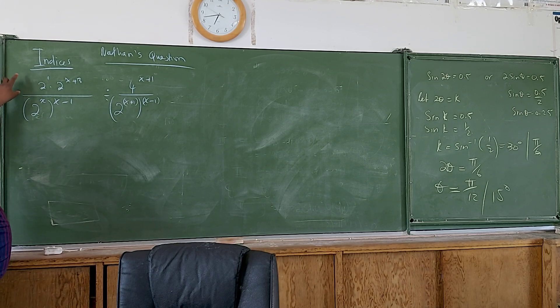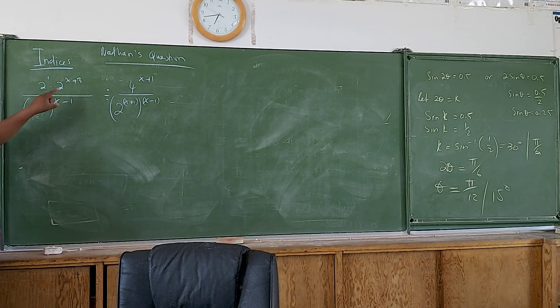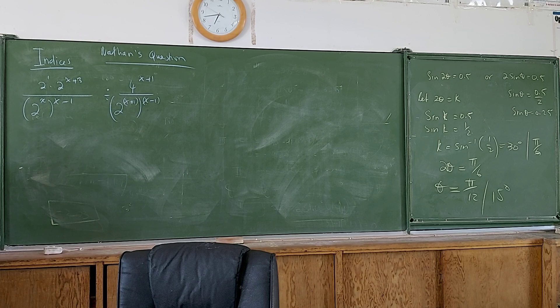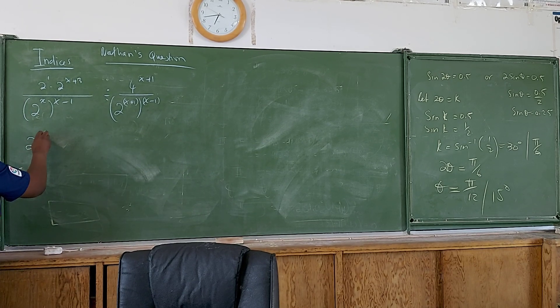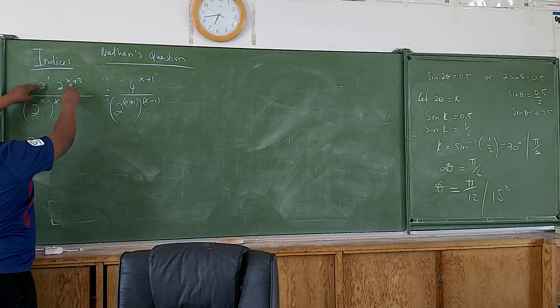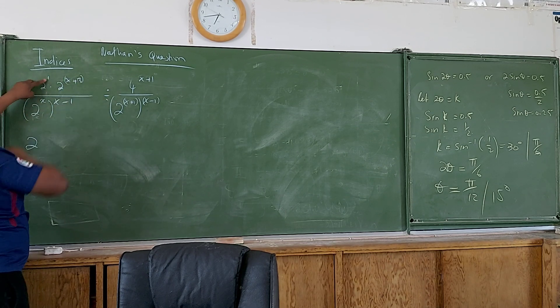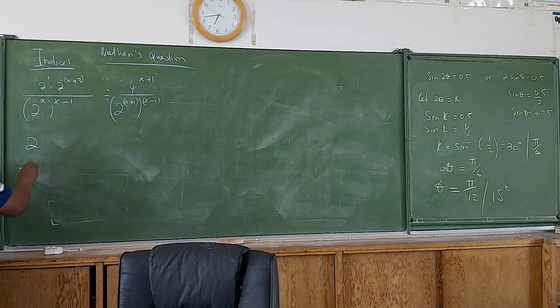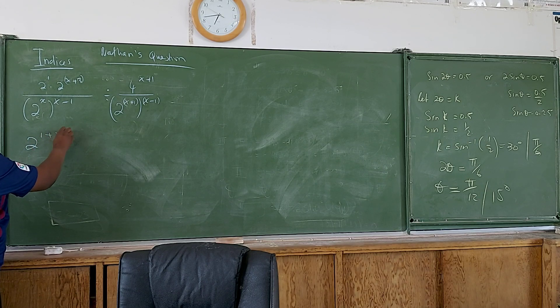This is already adopted in terms of 2. So you're going to do this: you're going to say 2, then when you multiply and the bases are the same, you are adding the indices, right. So you're going to add 1 plus x plus 3.